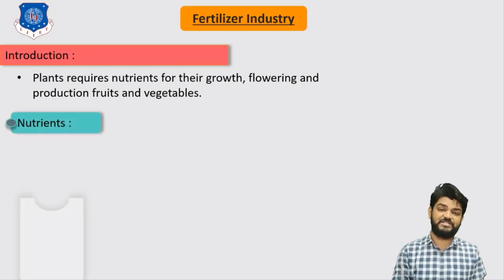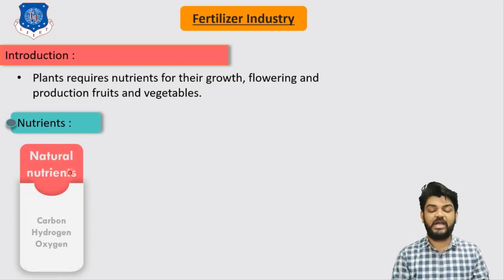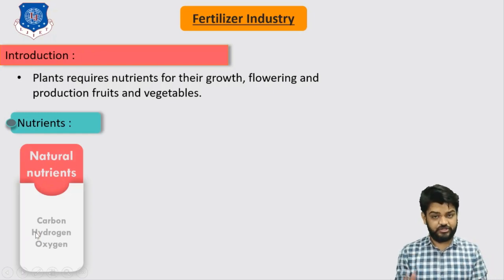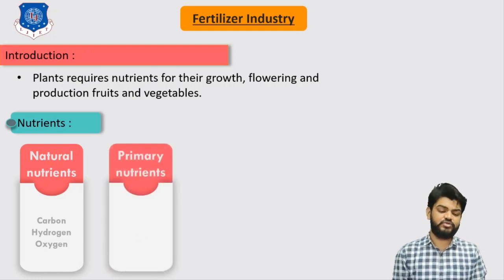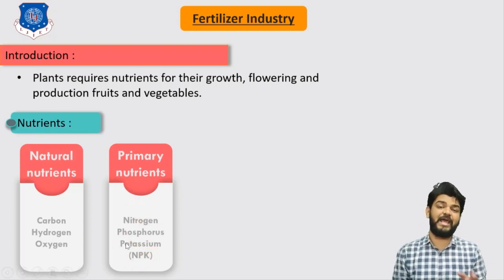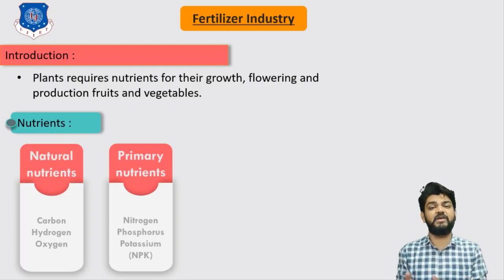There are different types of nutrients which can be classified into categories. The first type is natural nutrients — carbon, hydrogen, and oxygen — which are very necessary for all plants. Then come the primary nutrients: nitrogen, phosphorus, and potassium, which together are referred to as NPK. These are nutrients which we can synthesize ourselves, and throughout this chapter we are going to see these NPK fertilizers in detail.